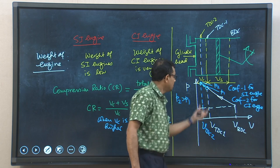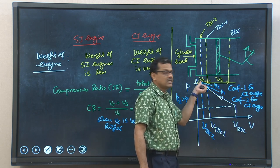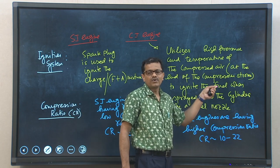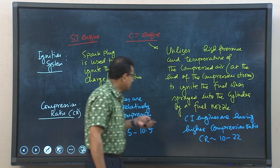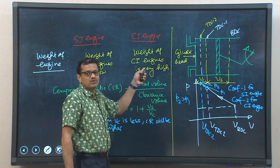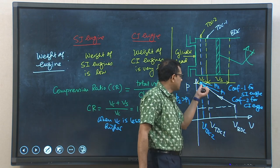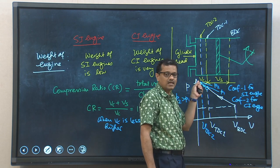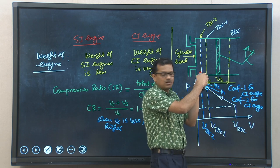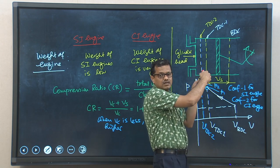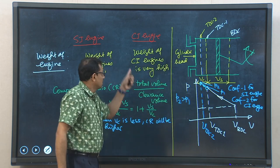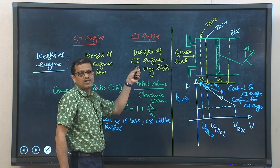If the compression ratio is increased, Vc must be reduced, pressure increases, and that high pressure and temperature allow fuel to auto ignite when spread into the cylinder by a fuel nozzle. However, if compression ratio is high, the pressure inside the cylinder is very high, and the cylinder wall must be thicker to withstand it — acting like a pressure vessel — so the weight of CI engines automatically increases.